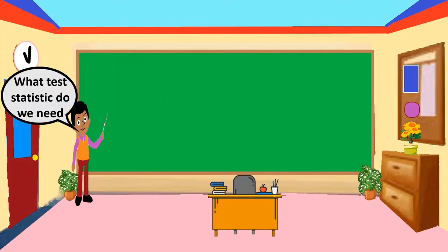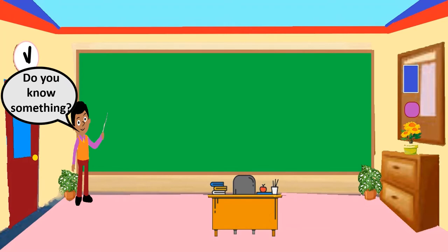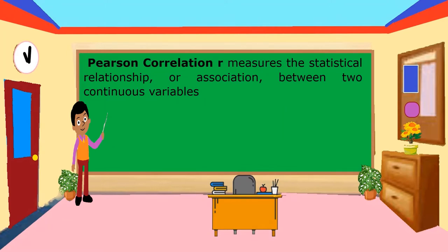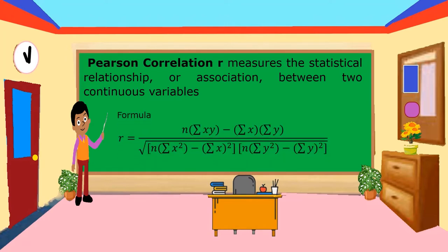What test statistic do we need in determining the strength of relationship of two variables? Pearson correlation R measures the statistical relationship or association between two continuous variables. The formula is: R equals n multiplied by the summation of the product of XY, minus the product of the summation of X and summation of Y, all over the square root of the product of two groups — the first being n times the summation of X squared minus the square of the summation of X.